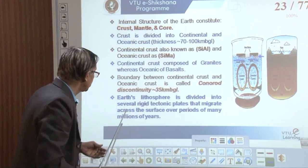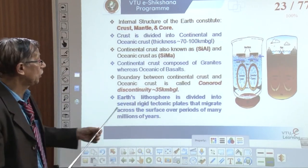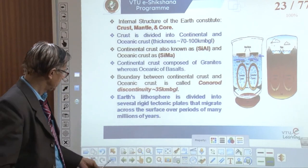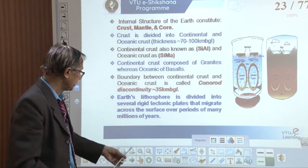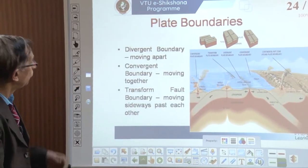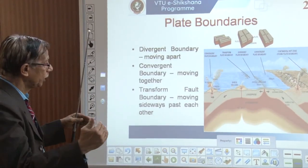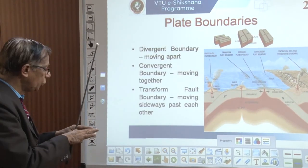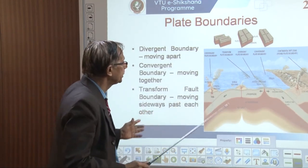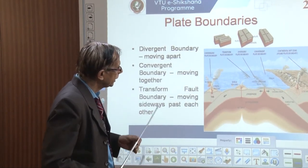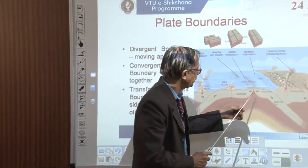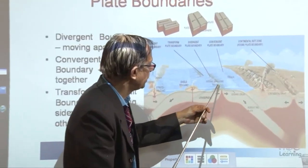Earth's lithosphere is divided into several rigid tectonic plates that migrate — moving apart or coming together. Where two plates move apart, that is a divergent boundary. Where two plates come together, that is a convergent boundary.